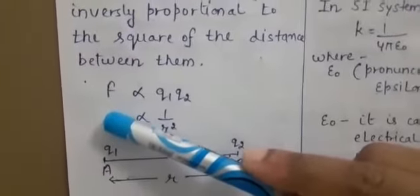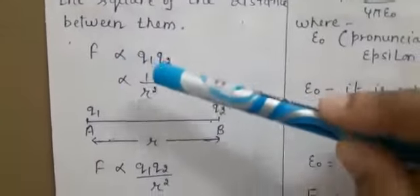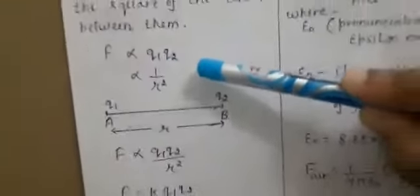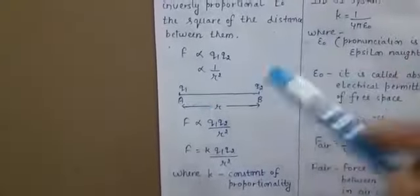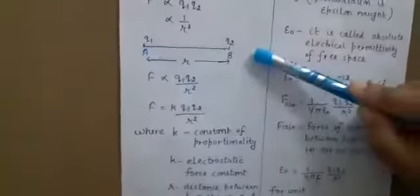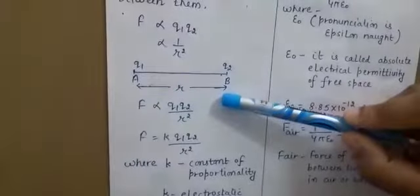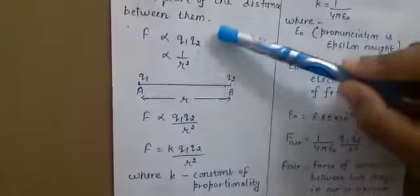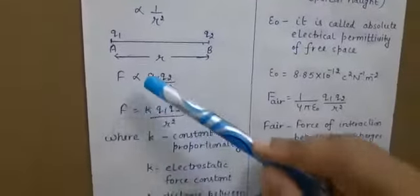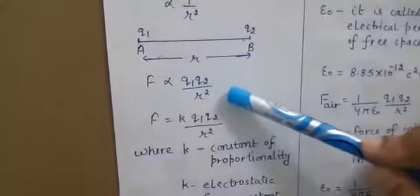The force of interaction between the charged bodies is directly proportional to the product of the charges and inversely proportional to the square of the distance between them. These are two charges Q1 and Q2, separated by distance R. When you combine these two results, you get F is proportional to Q1 Q2 divided by R square.